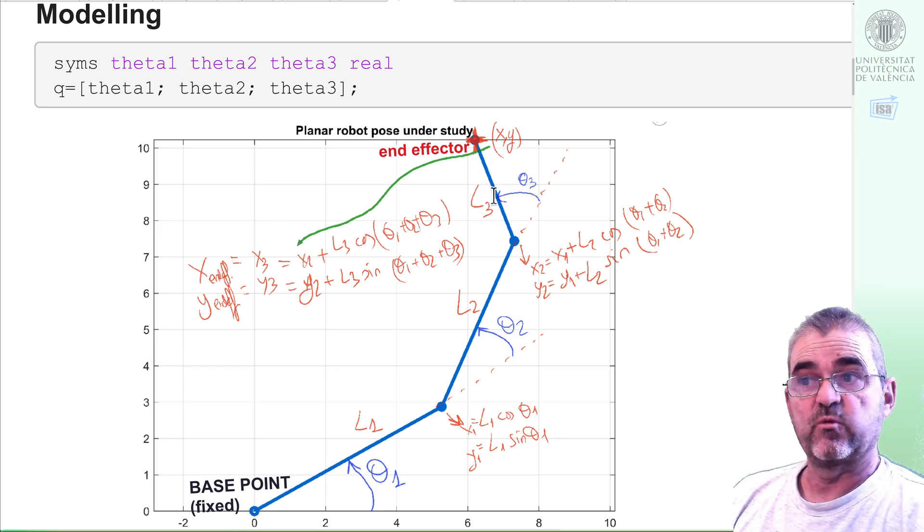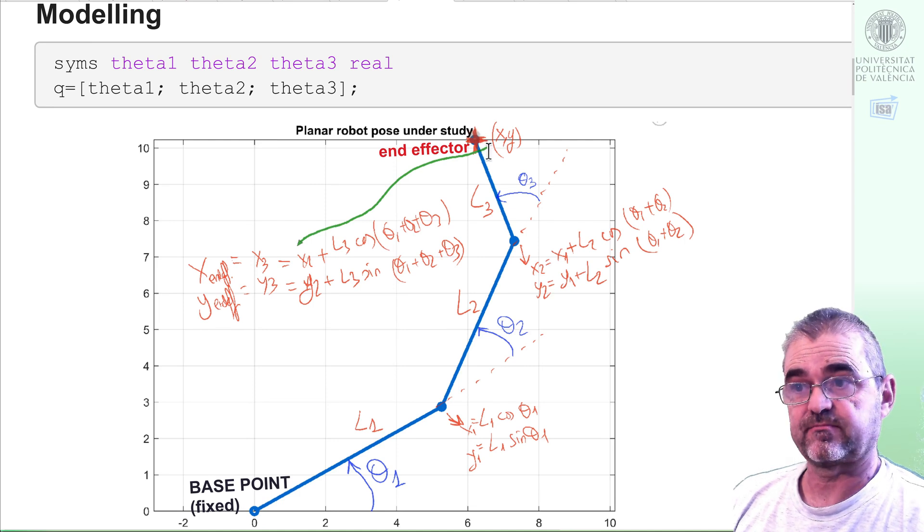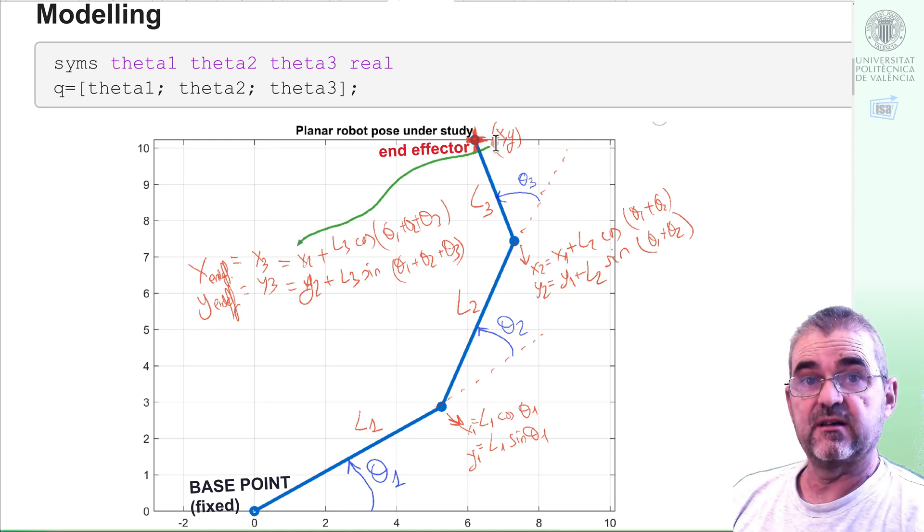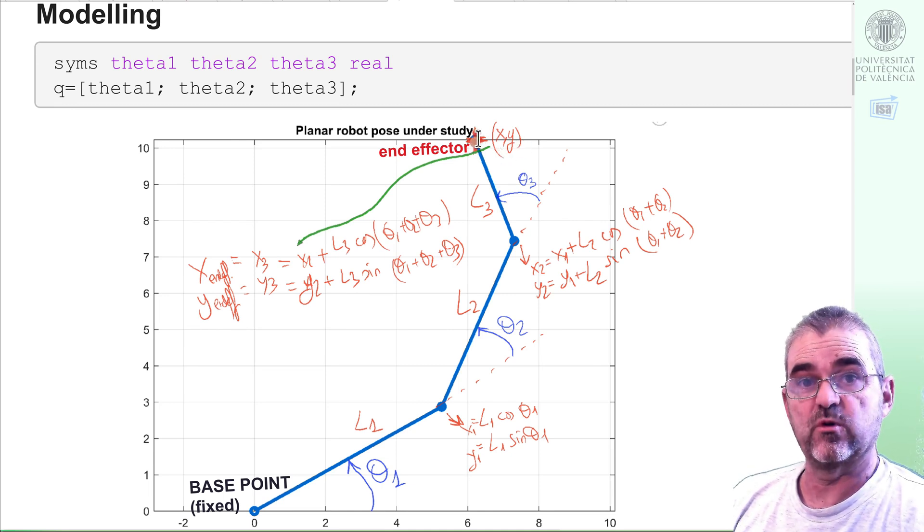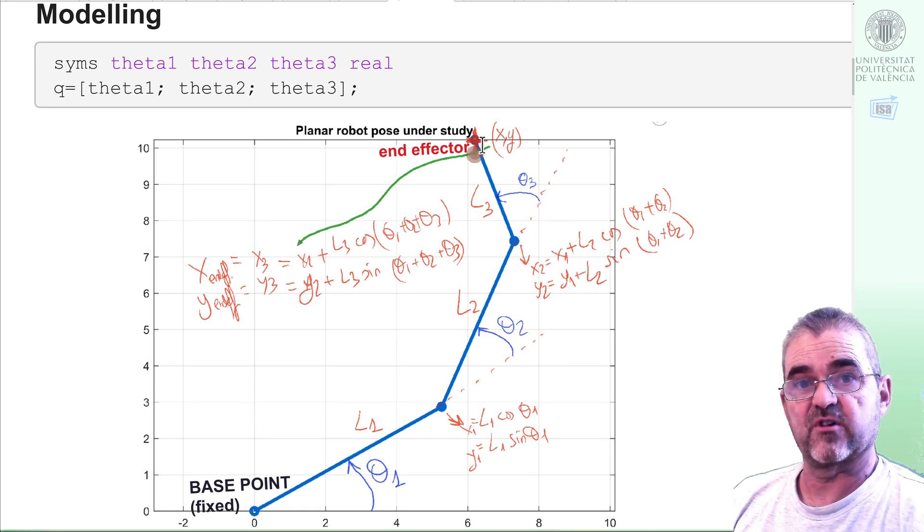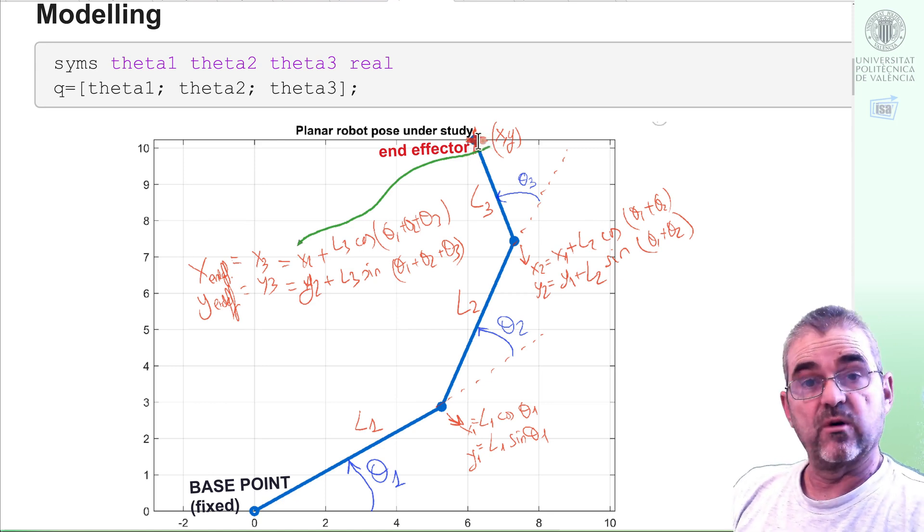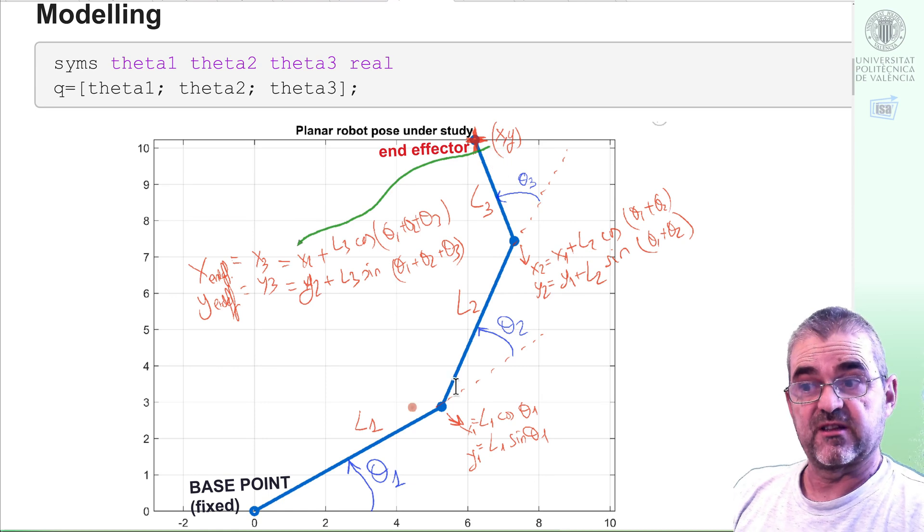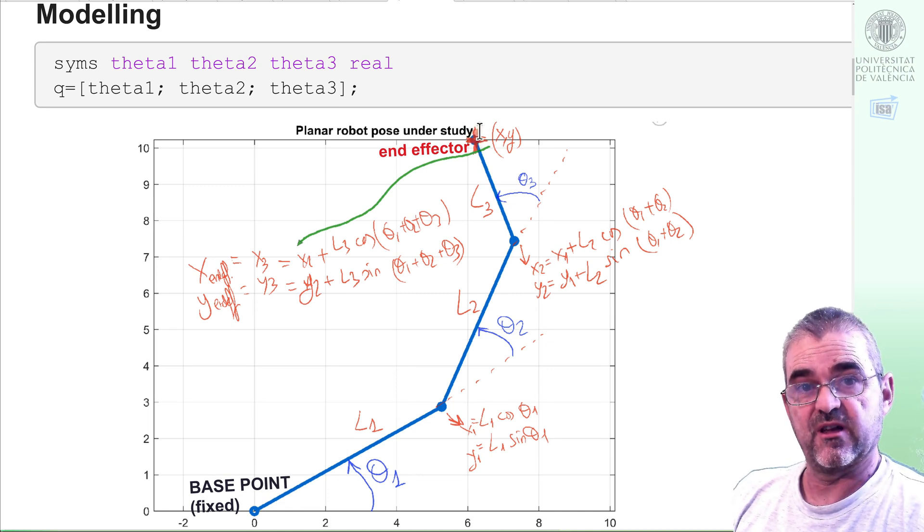The end effector will be the end of the last segment comprising the planar robot, highlighted with this red cross. We will be interested only in its position x,y and not in its orientation. So as we're only interested in these two features x,y of my end effector, then this planar robot can be considered a redundant manipulator because it has three degrees of freedom but we just have two specifications on what to do in the end effector.